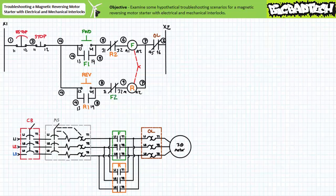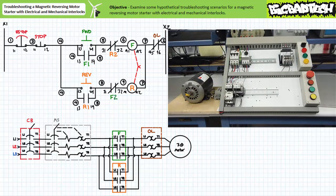Let's now consider this magnetic reversing motor starter with electrical and mechanical interlocks response to an overload event caused either by a large mechanical load, a locked rotor, or a single phasing event. Consider what would happen if the motor is overloaded in the forward direction and the overload is in automatic reset mode.